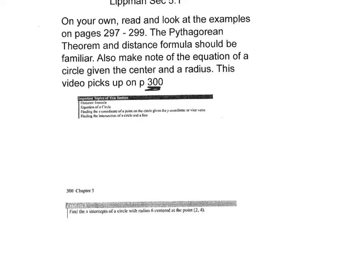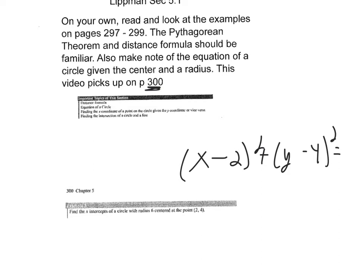I want to find the x-intercepts of a circle that has a radius of 6 and is centered at the point (2, 4). The equation of a circle is (x minus the x-coordinate of the center) squared plus (y minus the y-coordinate of the center) squared equals the radius squared, which in this case is 36.